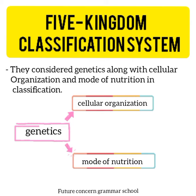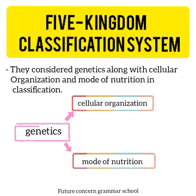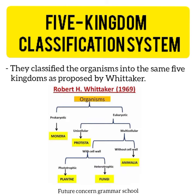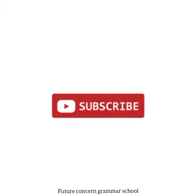Margulis and Schwarz نے Whittaker کے Five Kingdoms system میں ترامیم کی۔ انہوں نے classification کے لیے Cellular Organization اور خوراک حاصل یا تیار کرنے کے طریقوں کے ساتھ genetics کو بھی بنیاد بنایا۔ انہوں نے جانداروں کی classification کے لیے وہی پانچ kingdoms رکھے جو کہ Whittaker نے تجویز کیے تھے۔